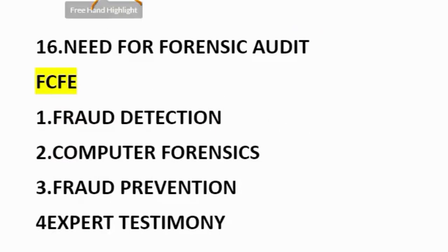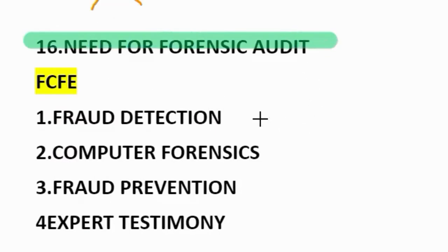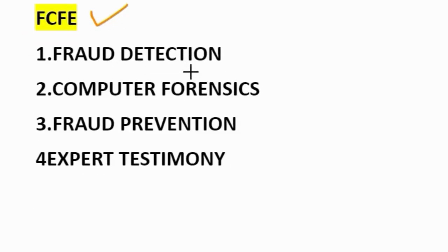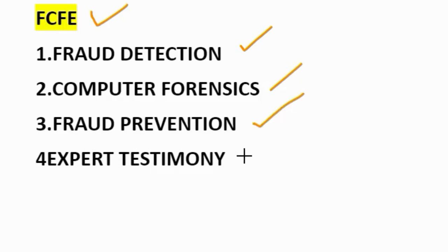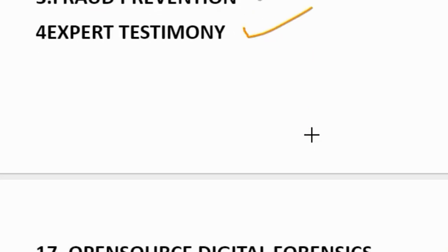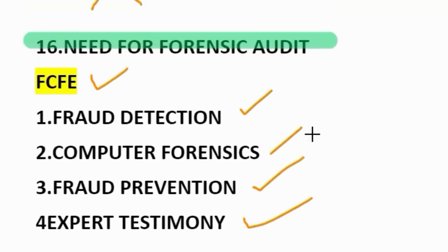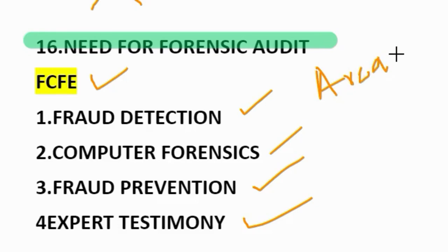Sixteenth question: need for forensic auditor. How to remember? FCFE — free cash flows for equity. F stands for fraud detection. C stands for computer forensics. F stands for fraud prevention. E stands for expert testimony. In the exam, this can also be asked as: areas in which forensic auditor can render service. You can mention these four points for either version of the question.